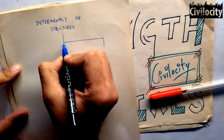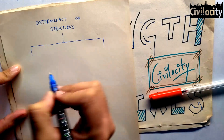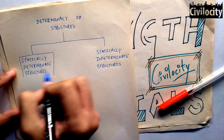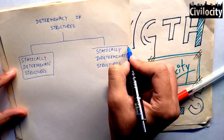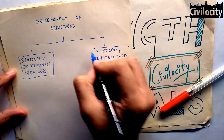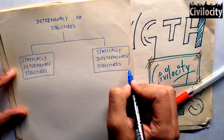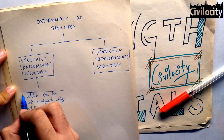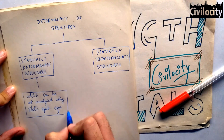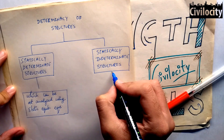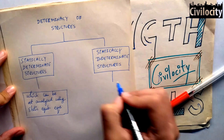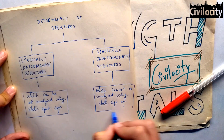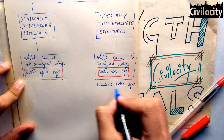Determinacy of structures has been divided into two parts. The first one is statically determinate structures and the second one is statically indeterminate structures. Statically determinate structures are those that we can analyze using static equilibrium equations. Statically indeterminate structures are those that we cannot solve with equilibrium equations alone.